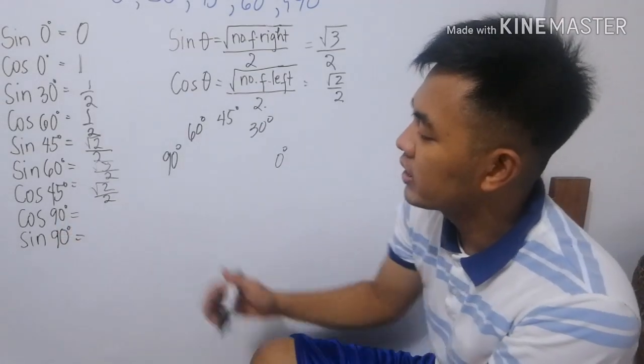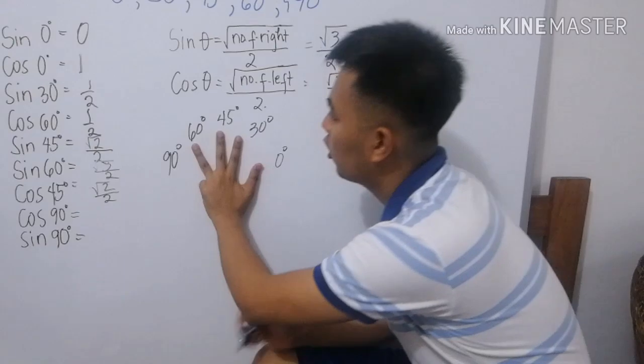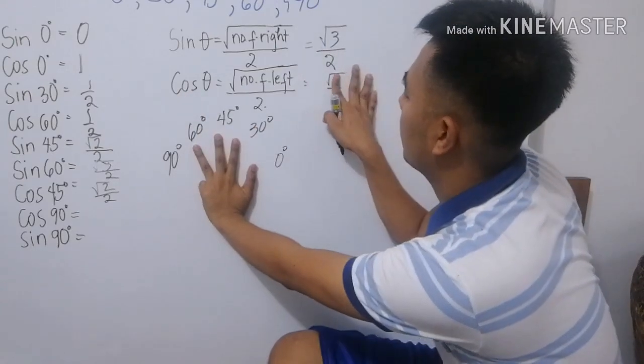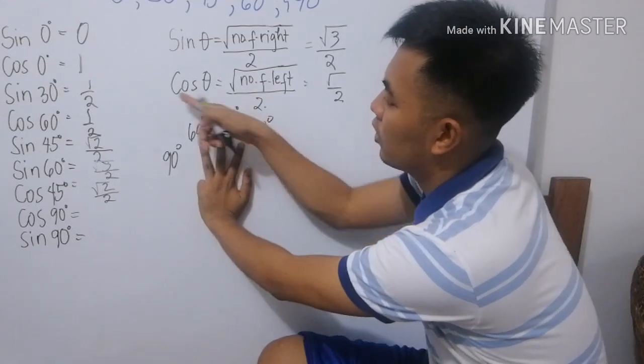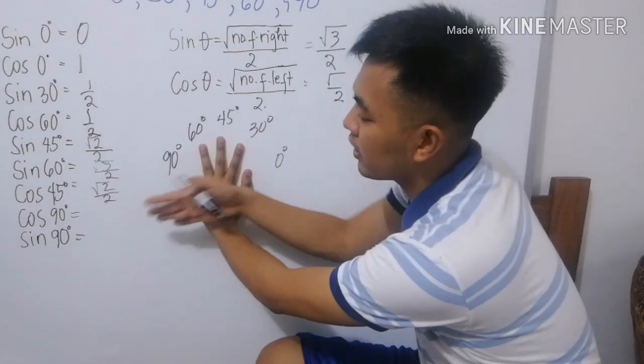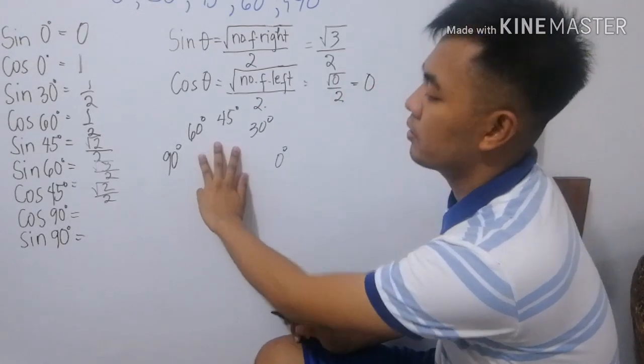Next. Cosine 90. 90. Cosine. Number of fingers sa left. Ilan ang natin? Wala. So, 0. 0 degrees.